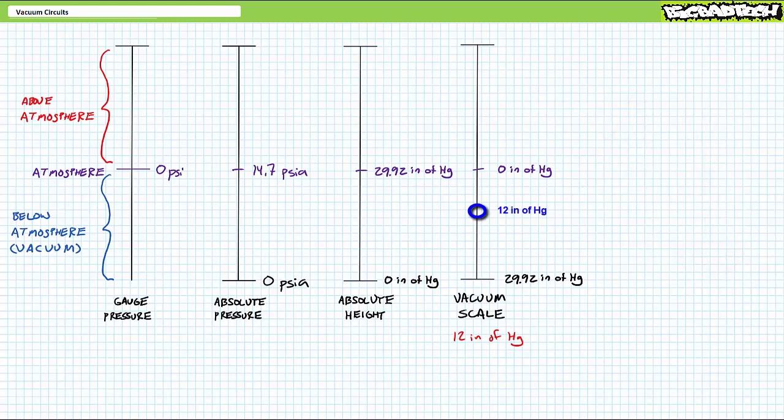Let's say we've got 12 inches of vacuum expressed using the vacuum scale. And we want to express the same value using the absolute scale. This takes a couple steps. Vacuum scale to absolute height scale, then absolute height scale to absolute pressure. To convert from the vacuum scale to absolute height scale, one needs to flip-flop the reading. 12 inches of vacuum means the 30-inch column of mercury moved down 12 inches, thus 30 minus 12, or 18 inches remains.